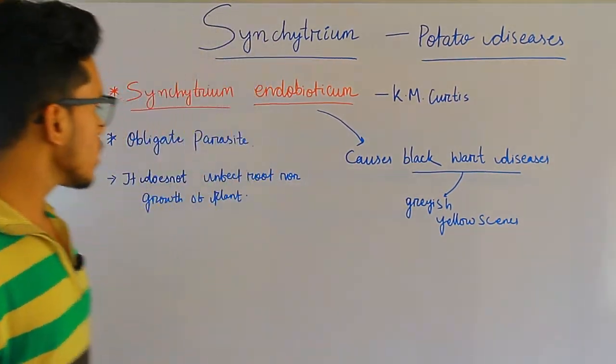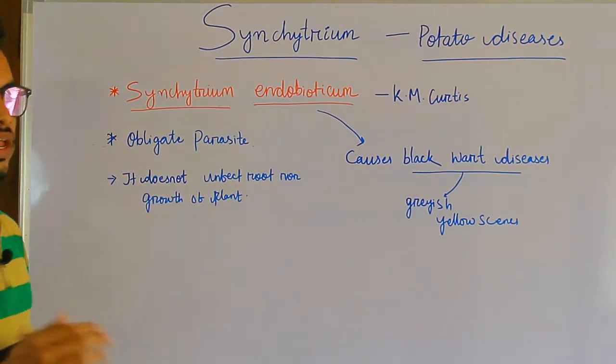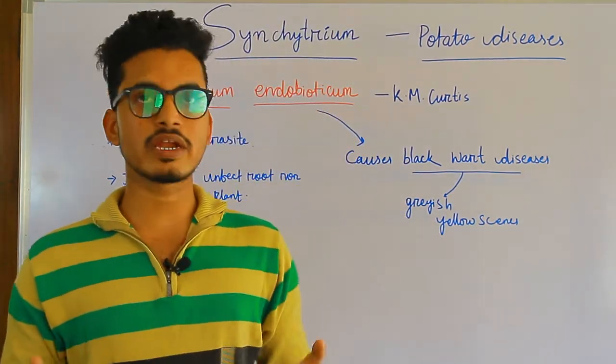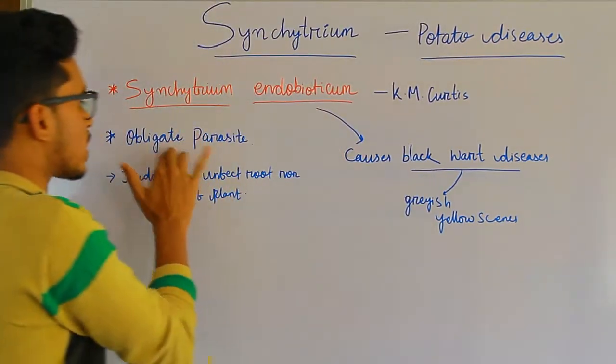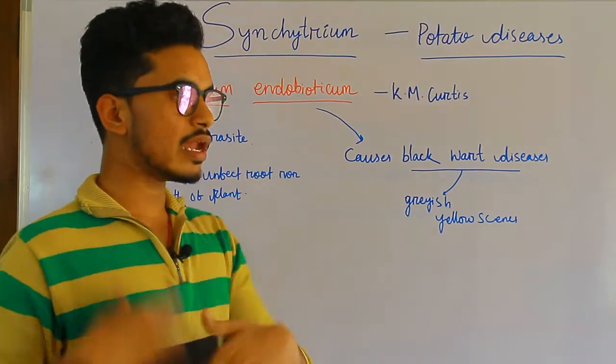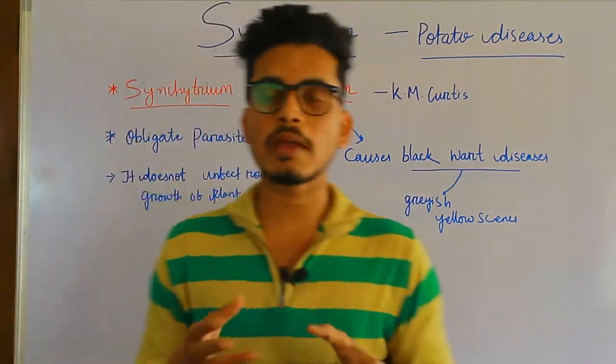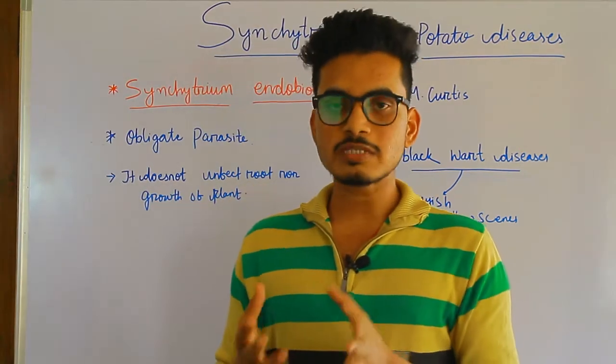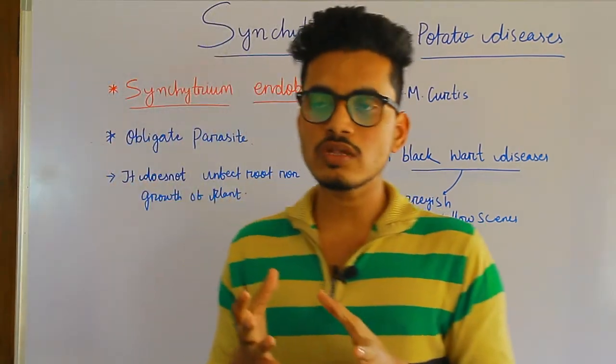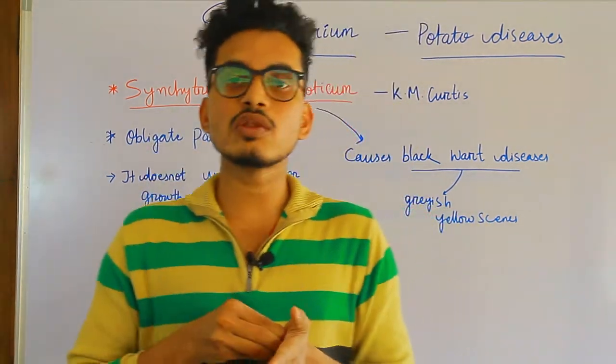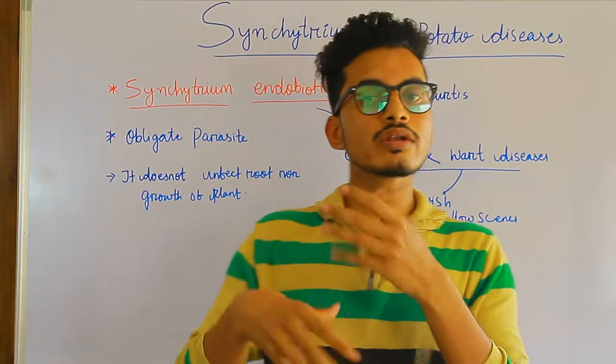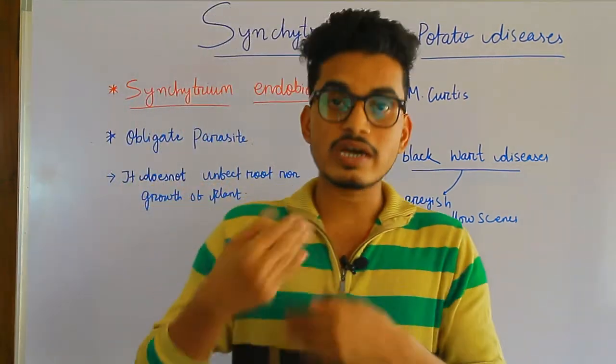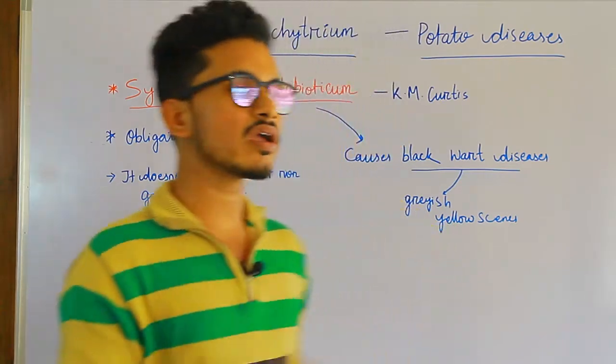Next, the species are obligate parasites. What is an obligate parasite? All species of Syncytium endobioticum are obligate parasites, meaning these species are intracellular parasites. They are not present outside the plant body but inside, causing disease by moving inside the plant body. That's why we call them obligate parasites.